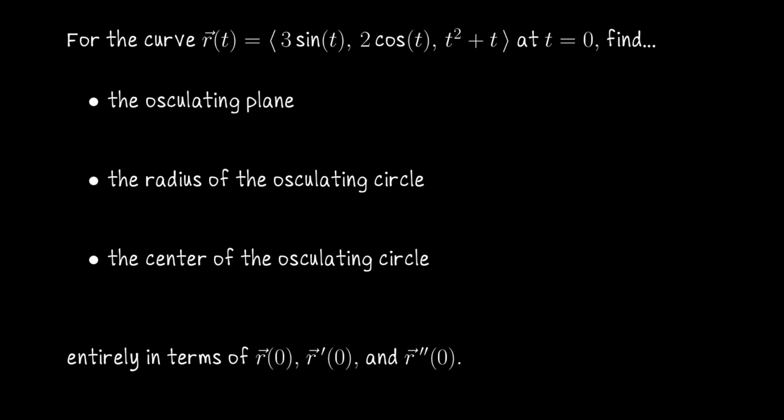In this video, we're going to work with information in the osculating plane. We have a parametric curve R(t) = (3 sin t, 2 cos t, t² + t). At the point where t = 0, we want to find an equation of the osculating plane, the radius of the osculating circle, and the center of the osculating circle.